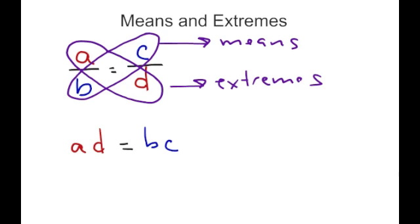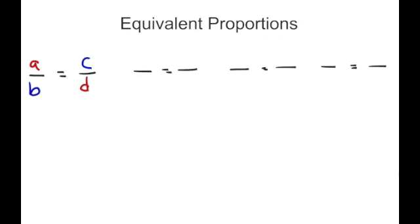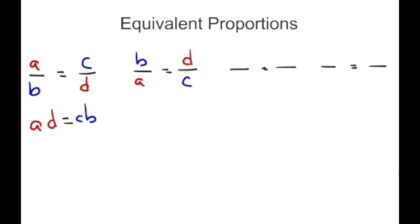Cross multiplication is all it's talking about: whenever you have a proportion, if your cross products are equivalent, it's proportional. You can also switch proportions around. If A over B equals C over D, you can flip A and B as long as you flip C and D as well, giving B over A equals D over C. The cross products remain the same: B times C equals A times D.